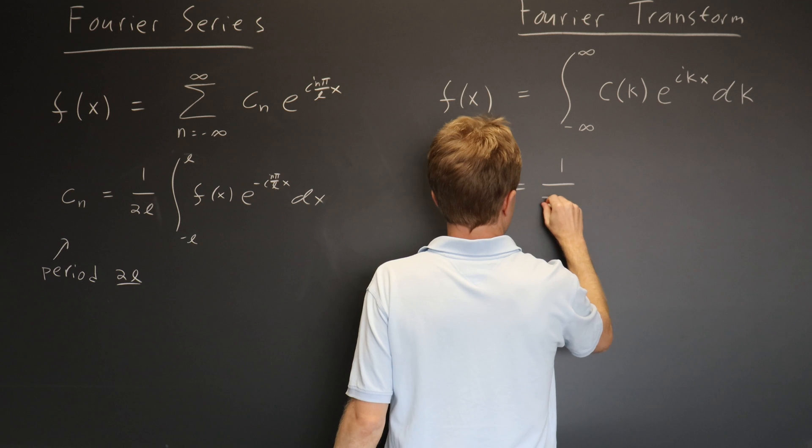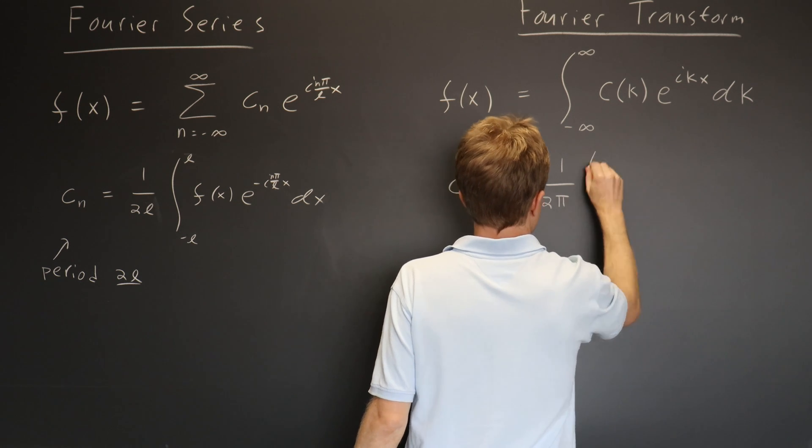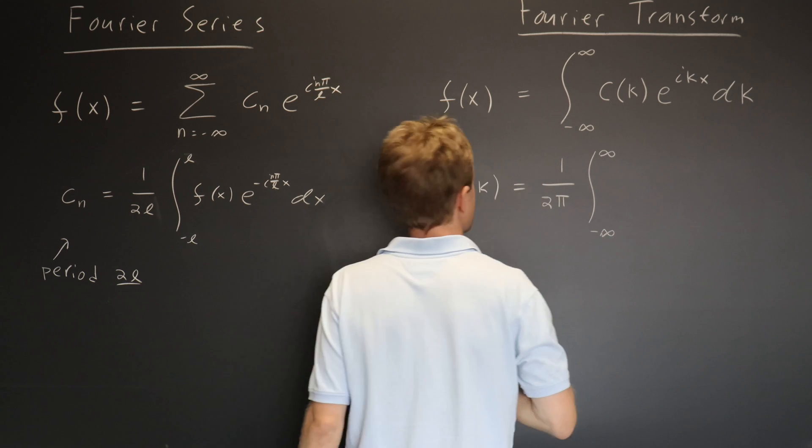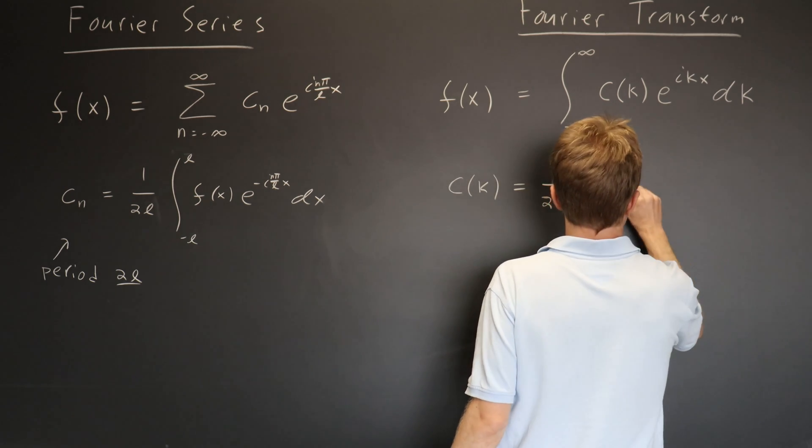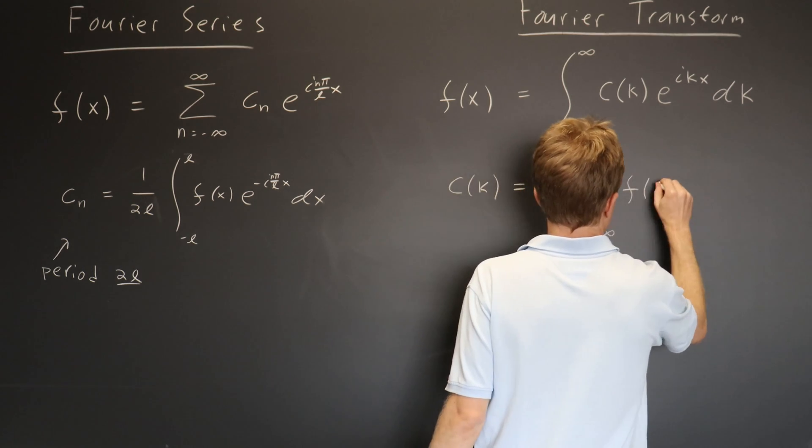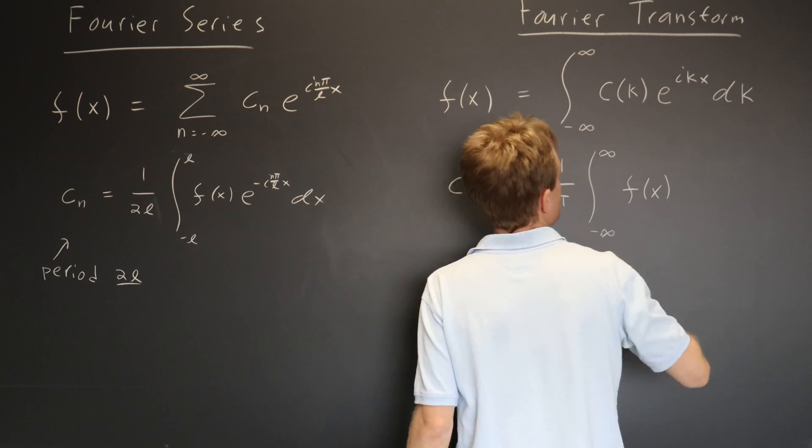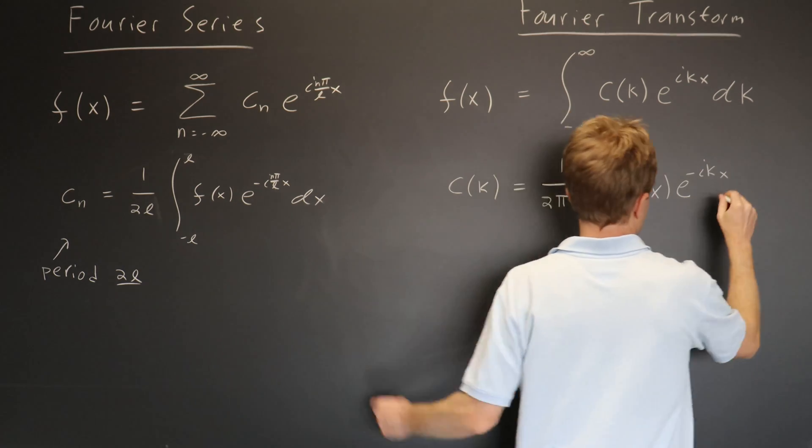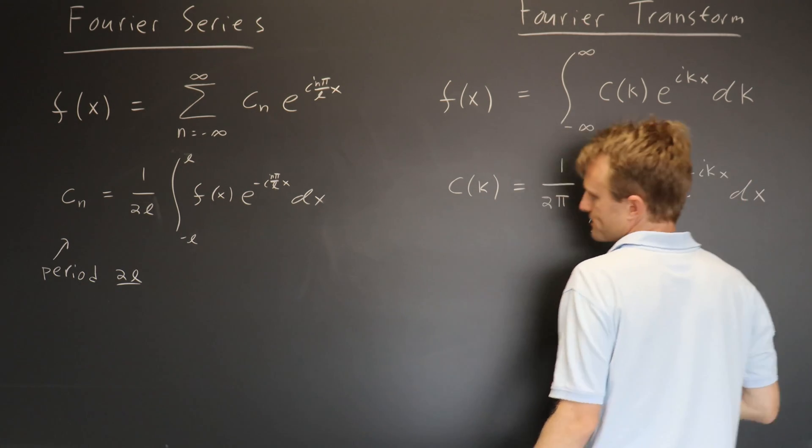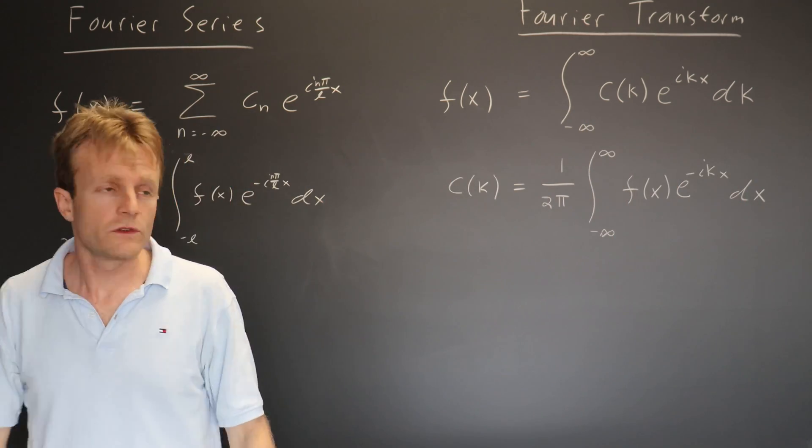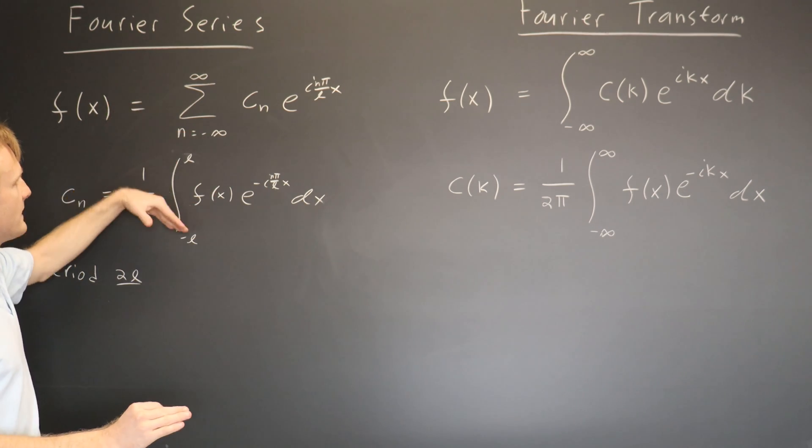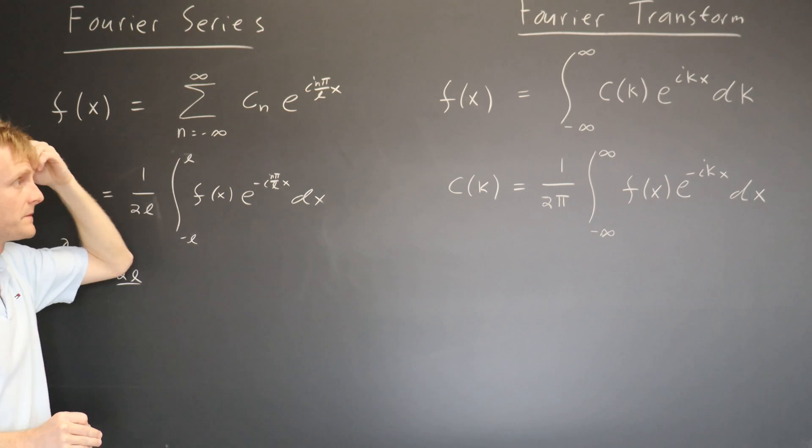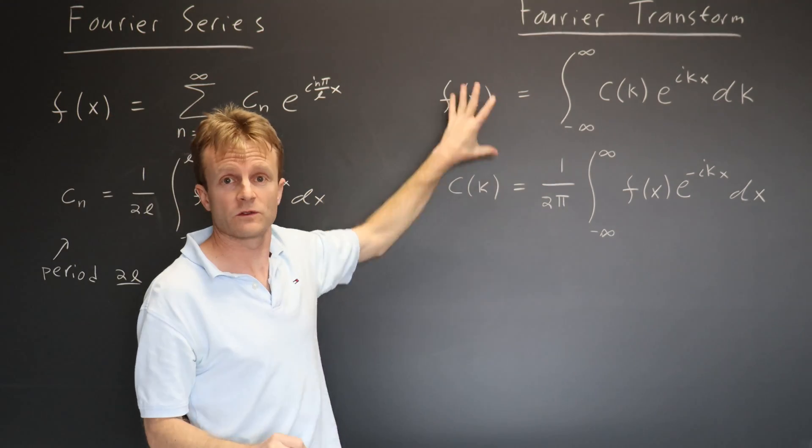And it turns out what we get is 1 over 2 pi. We're back to that normalization. The range goes from minus infinity to infinity. And now we have the same idea. It's f of x integrated against e to the minus i kx. And we're still integrating over dx. So notice that whereas the Fourier series was a little bit asymmetric, we have a sum up here and an integral down here,